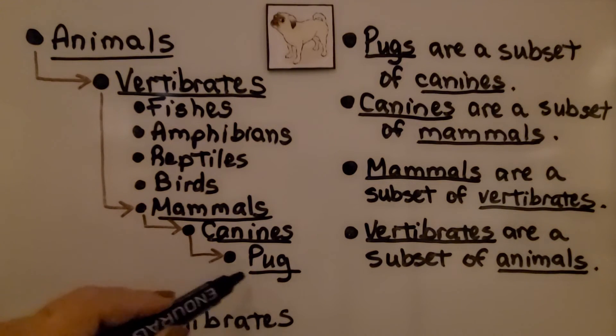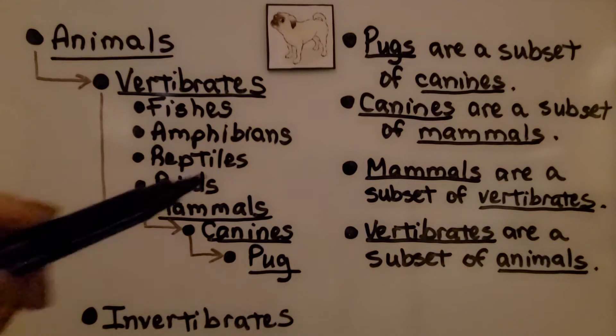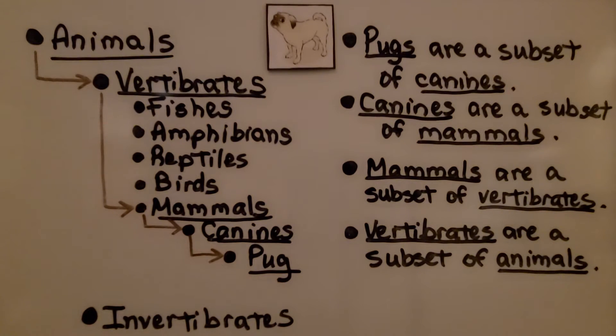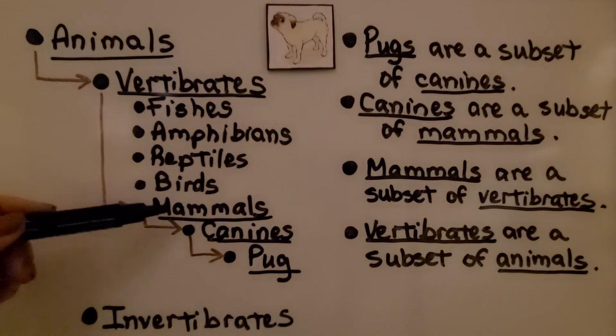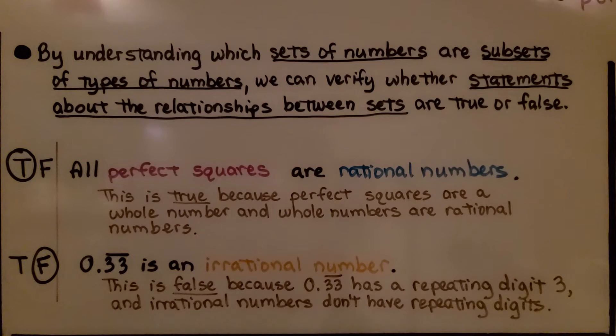We could even list collie, German Shepherd, and other dogs here, couldn't we? So pugs are a subset of canines, mammals, vertebrates, and animals. By understanding which sets of numbers are subsets of types of numbers, we can verify whether statements about the relationships between sets are true or false.